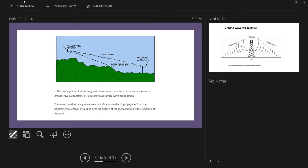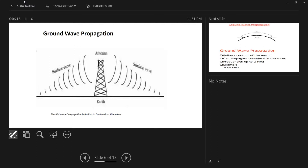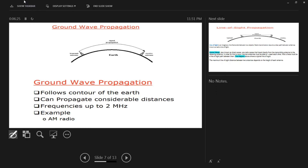The next propagation type is ground wave propagation. As the name suggests, the wave stays very close to the earth's surface and travels along the contours of the earth — meaning it follows the shape of the earth. This propagation is used for very long distances. The frequency range is up to 2 MHz. An example is AM radio, though not many people listen to it nowadays.